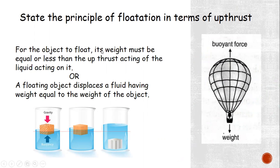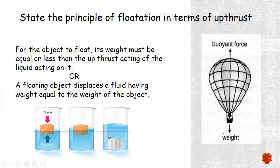The principle of flotation states: for an object to float, its weight must be equal to or less than the upthrust acting on it from the liquid. Equivalently, a floating object displaces a fluid whose weight equals the weight of the object. A balloon floats when its buoyant force equals its weight — it is only partially submerged, but gravity and the buoyant force balance so it floats on the surface. If its weight exceeds the upthrust acting on it, it will sink.